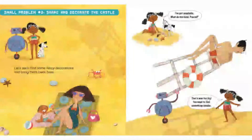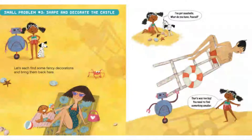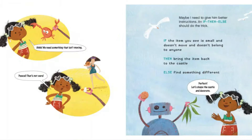Small problem number three: shape and decorate the castle. Let's each find some fancy decorations and bring them back here. I've got seashells. What do you have, Pascal? That's way too big! You need to find something smaller! We need something that isn't moving! Pascal, that's not ours! Maybe I need to give him better instructions. An if-then-else should do the trick. If the item you see is small and doesn't move and doesn't belong to anyone, then bring the item back to the castle. Else, find something different. Perfect! Let's shape the castle and decorate.